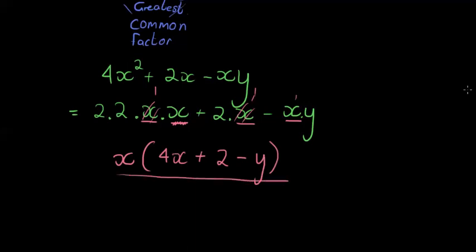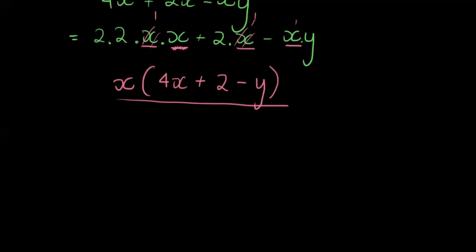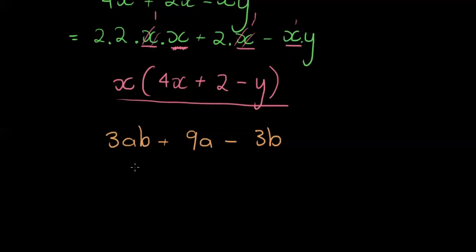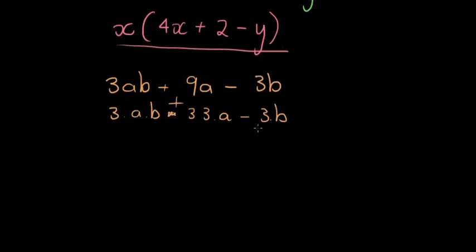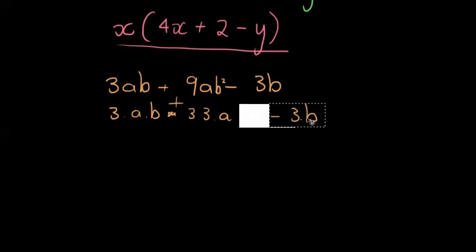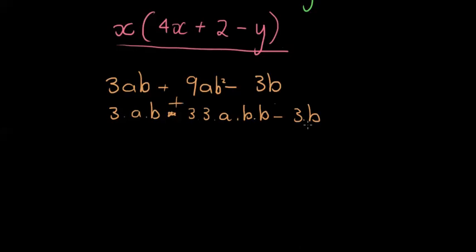One more example: 3ab + 9ab² − 3b. Writing each term in its factors: 3ab = 3 times a times b; 9ab² = 3 times 3 times a times b times b; and −3b = −(3 times b). I wanted to show this example because of what happens when you take out all factors of a certain term.